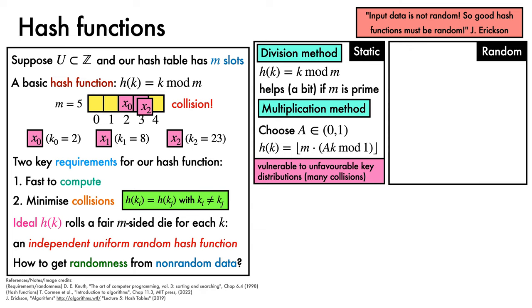Random hash functions represent an implementation of this idea, in which we randomly choose a function from among a family of hash functions. A useful concept here is that of a universal family of hash functions H, which has the property that the probability of collision for any distinct pair of keys is less than 1 over M, the number of slots. Note that here, the probability is over the hash functions that form members of the family, not over the keys.